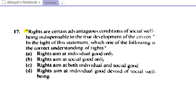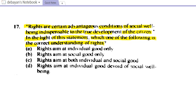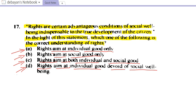Moving on to the next question. Rights are certain advantageous conditions of social well-being, indispensable to the true development of the citizen. In the light of this statement, which one of the following is the correct understanding of rights? Option A: rights aimed at individual good only. Option B: rights aimed at social good only. Option C: rights aimed at both individual and social good. Option D: rights aimed at individual good.